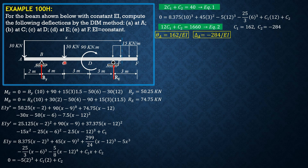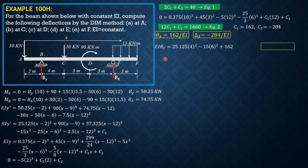Next, for the slope and deflection at C, set X equals 6 for the slope. So EI theta C equals 25.125(4) squared minus 15(6) squared plus C sub 1 which is 162. From here we can solve: theta C equals 24/EI.